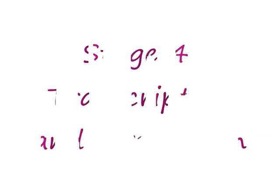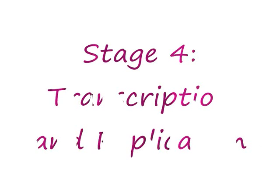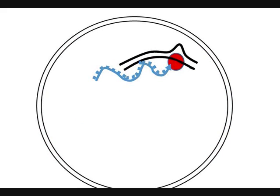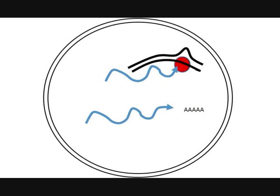Stage 4: Transcription and Replication. Following uncoating, transcription and replication begin. First, the DNA of the virus is transcribed into high molecular weight RNA molecules. Second, the host cell modifies the RNA by adding a 5' cap and 3' polyadenine tail, and removes any introns — introns being non-coding sequences.